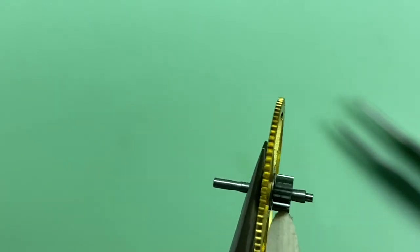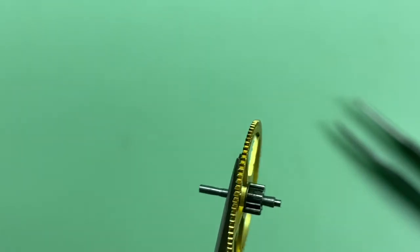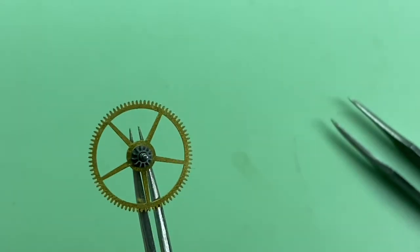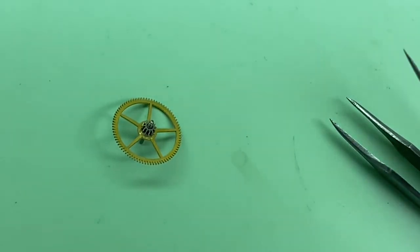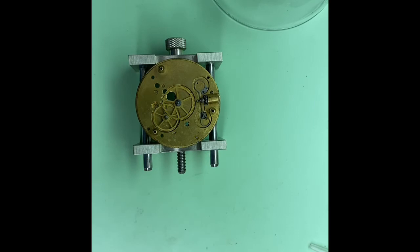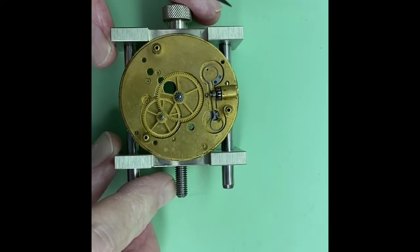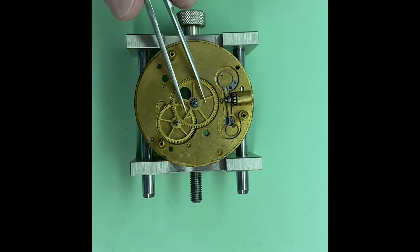So what does the pinion do? The safety pinion is on one of the gears or wheels that's in the center of the watch, and it's called the center wheel. That's the biggest gear in the watch.